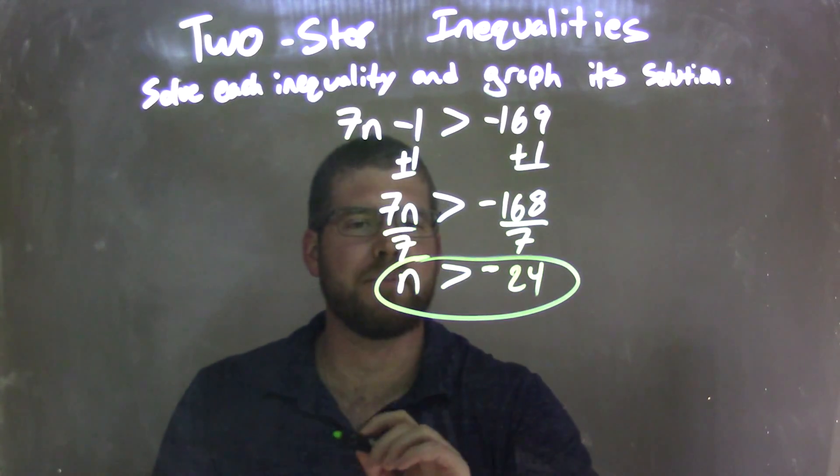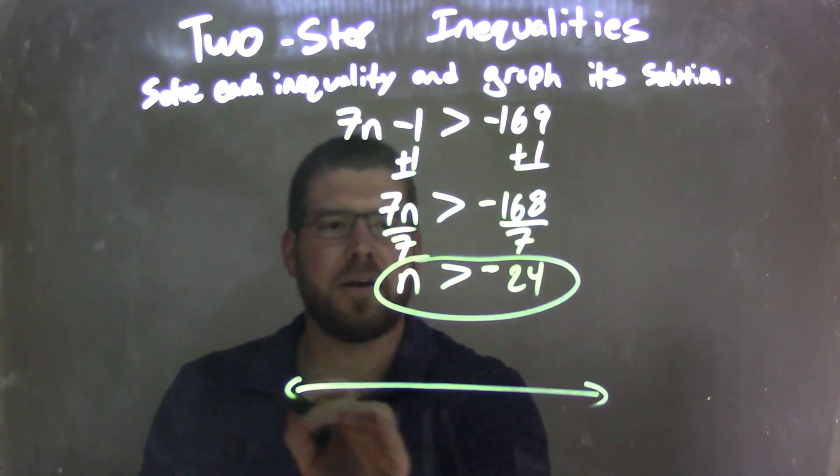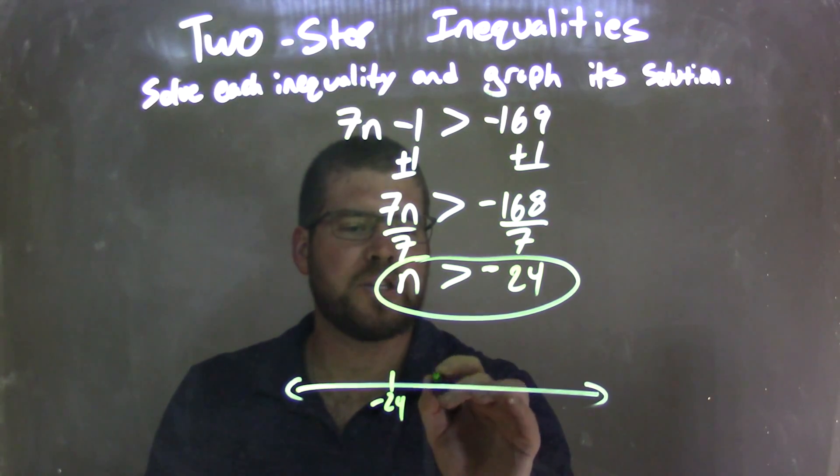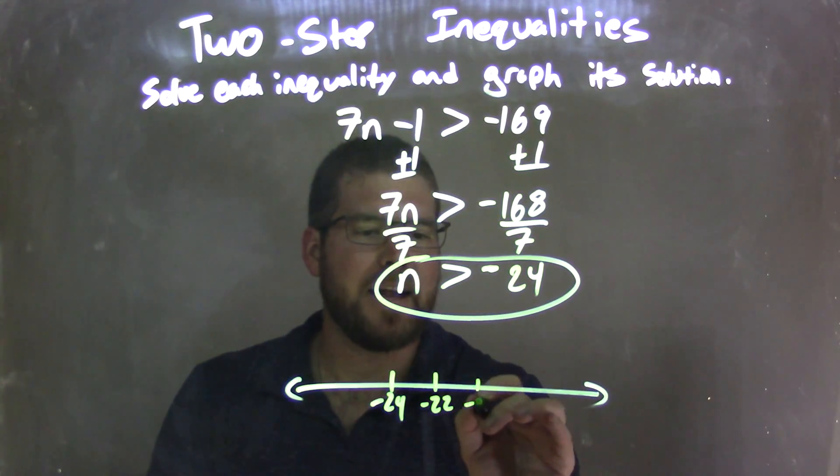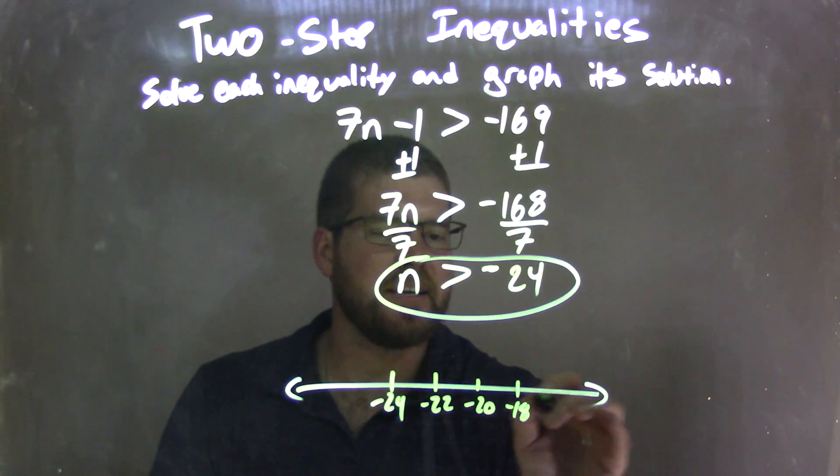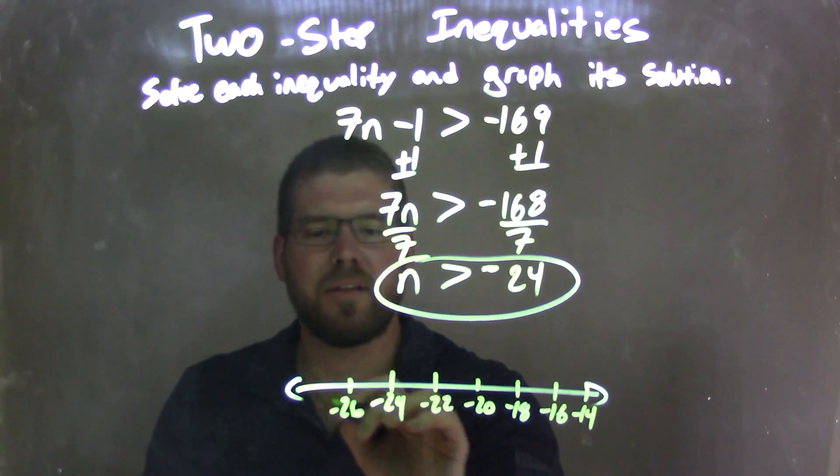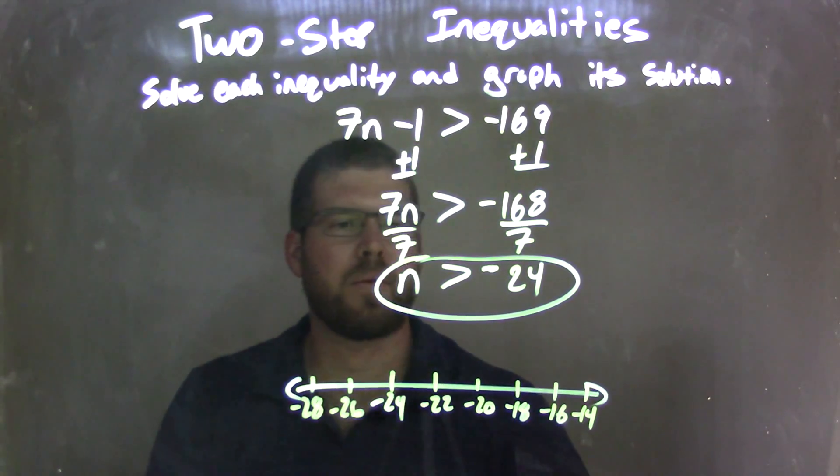Now I need to graph it. So, make my number line here, put negative 24 right there, and let's go by 2. Negative 22, negative 20, negative 18, negative 16, and negative 14. And then we have negative 26 on the left and negative 28.